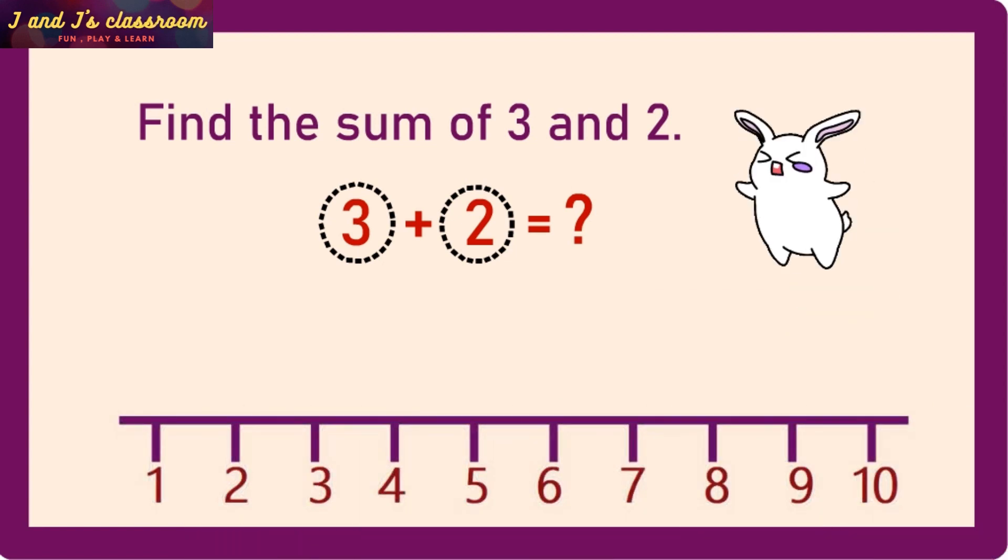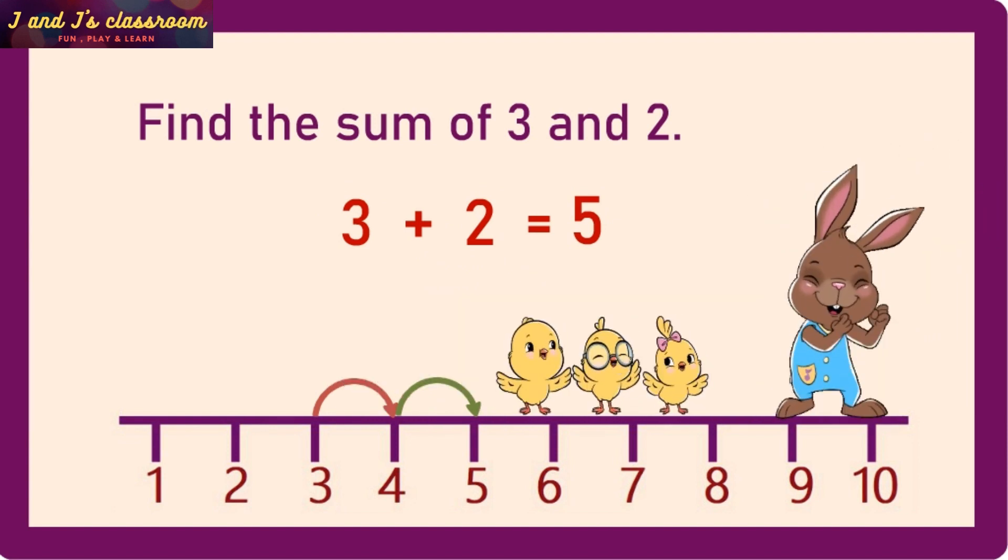Now our bunny friend is ready. Bunny, the first number is 3. So go and stand on the number line at 3. And the second number is 2. So jump two times from the number 3. 1, 2. Alright, now the bunny is in the number 5. Oh yes, that is the answer. So the sum of 3 and 2 is 5.